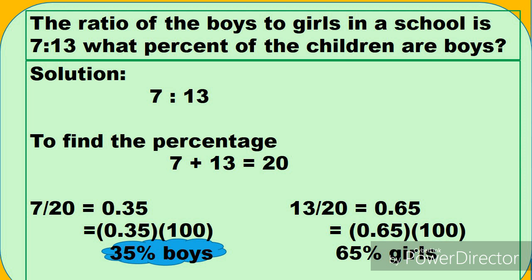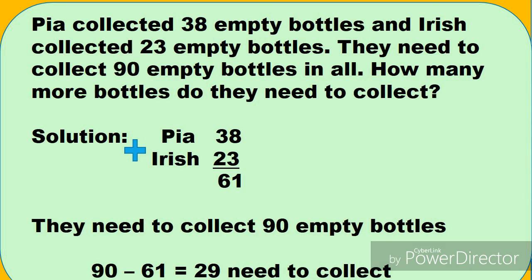Solve natin yung girls kung ilang percent yung girls. 13 yung girls divided by the 20 equals 0.65. So 0.65 times 100 equals 65 percent. Yun yung girls, 65 percent.